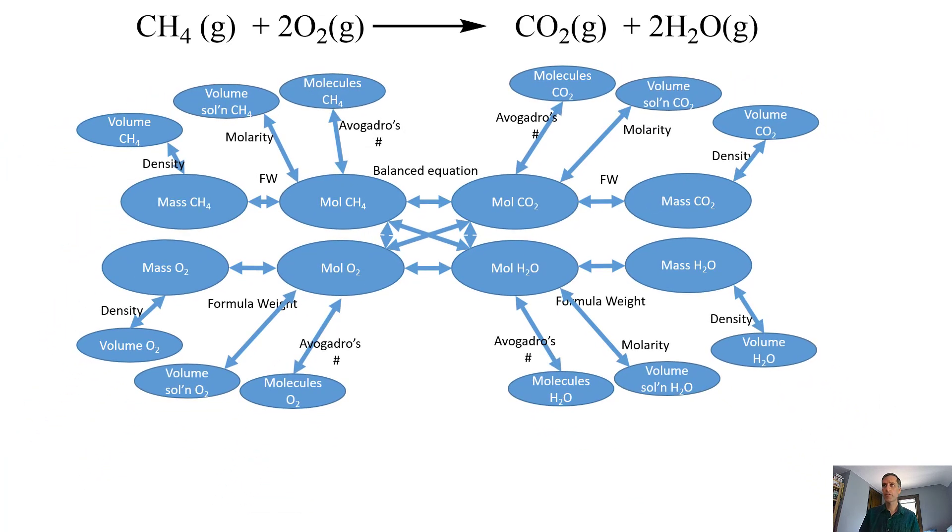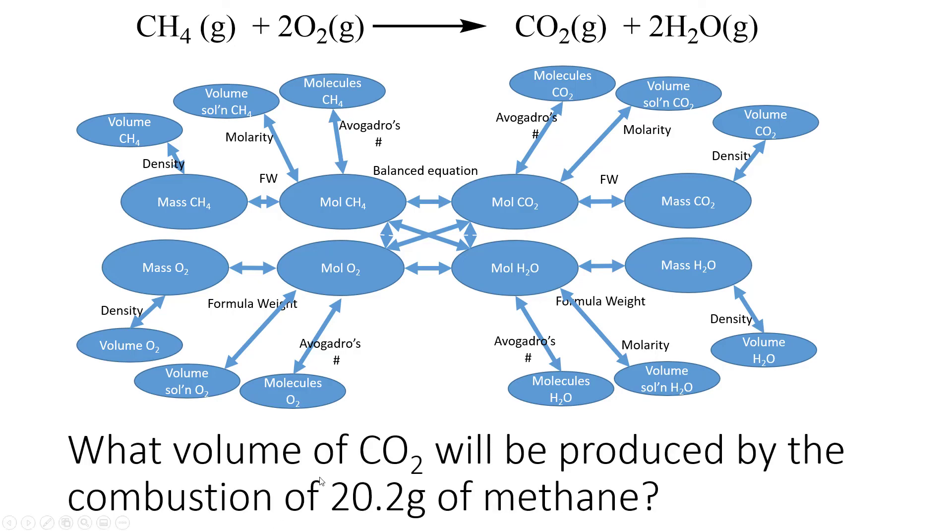Let's sort of think about what this could look like and how this might play out. This allows us to answer lots and lots of different questions, such as: what volume of CO2 will be produced by the combustion of 20.2 grams of methane? We're starting here at the methane, and we need to get over here to the volume of CO2. What we want to do is find the path that gets us there. There's a path that comes through here. That path is going to be what we need to then develop and create our equation to actually solve this for.